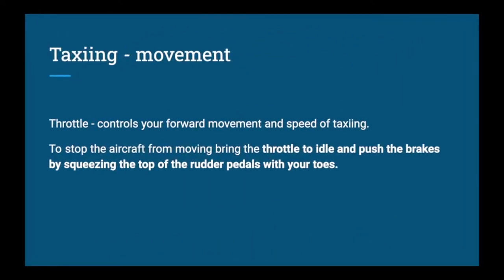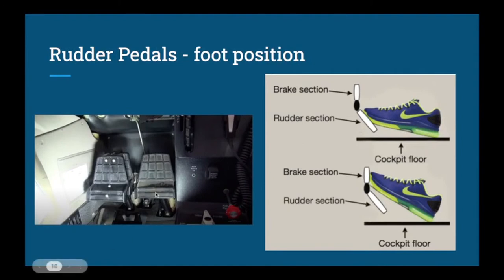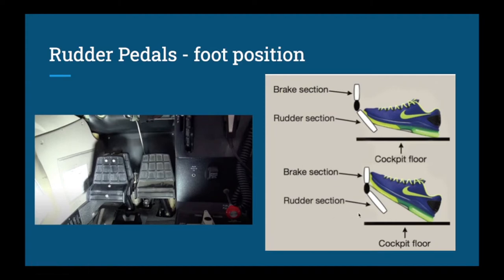If you want to come to a stop, first bring the throttle all the way to idle, then press the brakes by squeezing the top of the rudder pedals with your toes. Here is a diagram showing the rudder pedals of the Cessna 172. The top section of the pedals is the brake section — slide your toes up, press both brakes simultaneously with even pressure, and the aircraft will come to a stop straight ahead. The rudder pedals also control turning; the bottom section of the pedal is the rudder section.